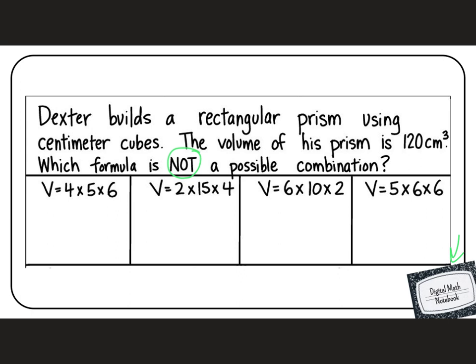The first one we have, V = 4 x 5 x 6. 4 times 5 is 20 times 6, 6 times 2 is 18. Ooh, we got 180. So that formula might not work. Let's keep going and see what else we have.